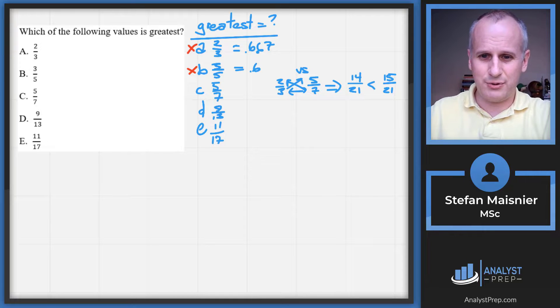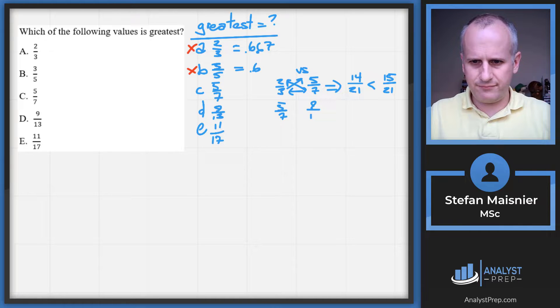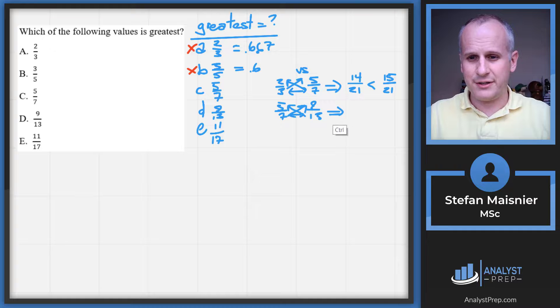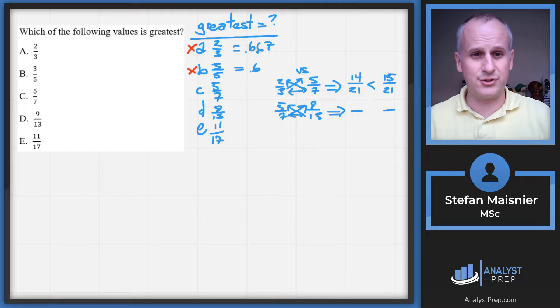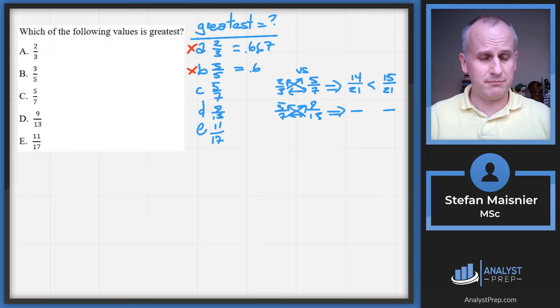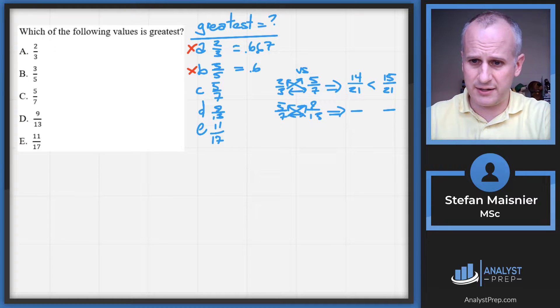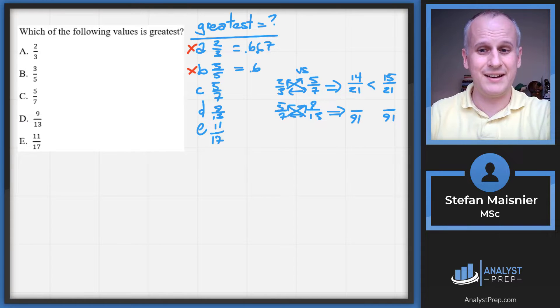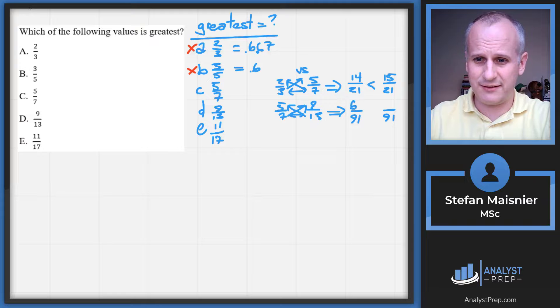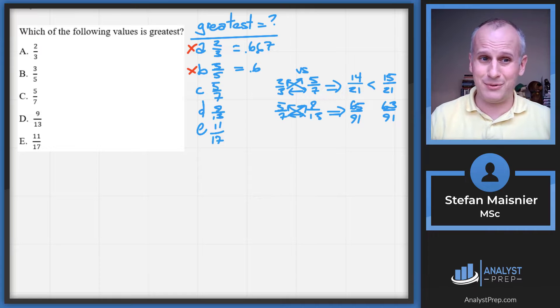Now five sevenths versus nine thirteenths. Get the common denominator: 13 times 7 is 70 plus 21, which is 91. Then 13 times five is 65 and seven times nine is 63. Incredibly close, but five sevenths keeps the win. So D is out.